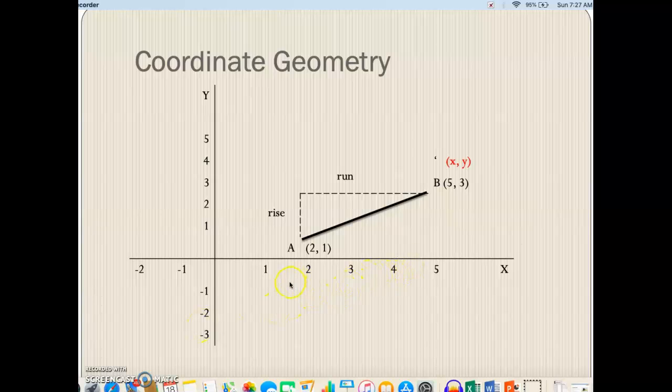Now every coordinate or every point has two coordinates. We know the x-coordinate first, followed by the y-coordinate. So when we say B is at the point 5, 3, it means that B is at the point where x is equal to 5 and y is equal to 3.